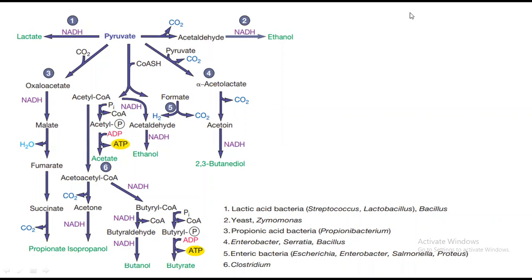This is a schematic diagram of different types of fermentation. As I mentioned in the previous video, pyruvate is very important for fermentation — without pyruvate, the fermentation process cannot proceed. Pyruvate can then be converted into different types of other products. In green color, these are the fermentative products that are produced, and pyruvate is the main starting point of fermentation.